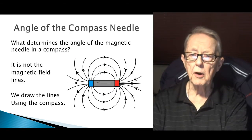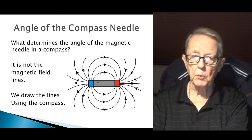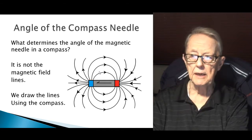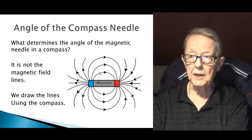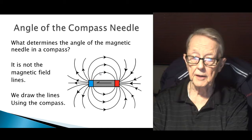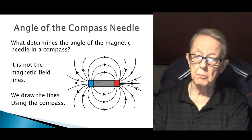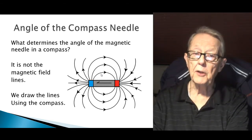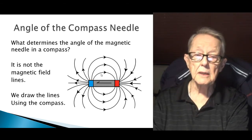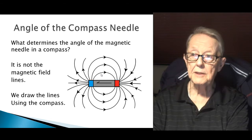I'm going to talk about the angle of the compass needle as we place it around a magnet — what determines the angle of the compass needle? It's not the magnetic field lines. What we do to get magnetic field lines is to take a compass, place it anywhere around the magnetic field, place it in different positions, and draw lines from the red point of one compass to the blue point of the next. We make the lines based on the position of the compass — it's not that the field lines determine the compass position.